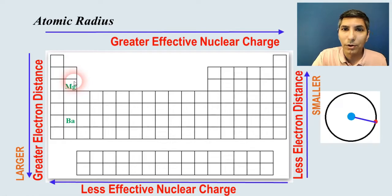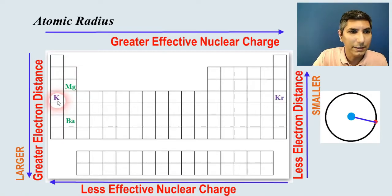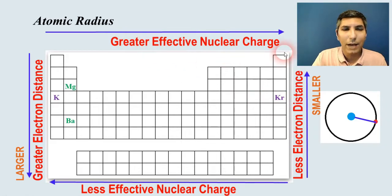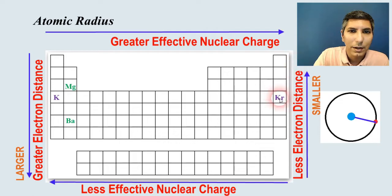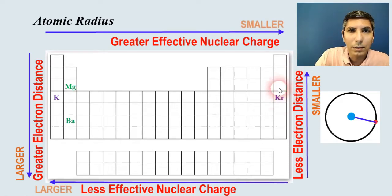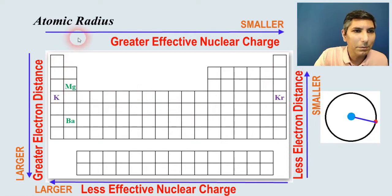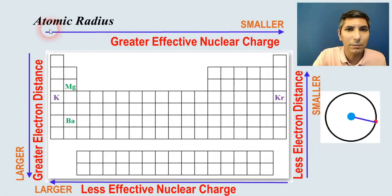If we're comparing atoms that are left and right across from each other, like potassium and krypton, the ones toward the right have a greater effective nuclear charge and are able to pull in those electrons more tightly. So krypton on the right is going to be smaller, and potassium on the left is going to be larger.